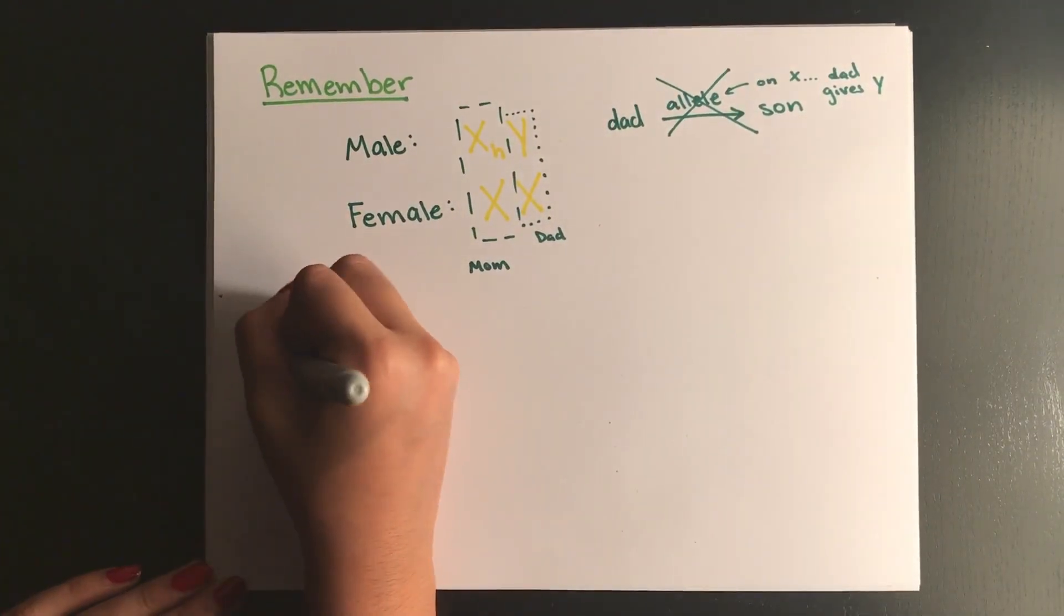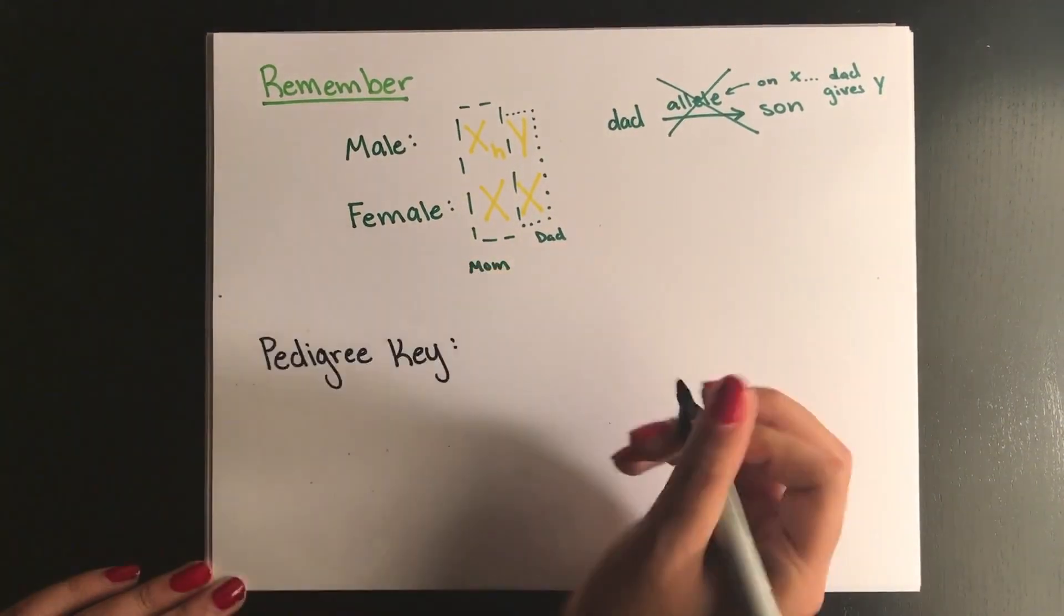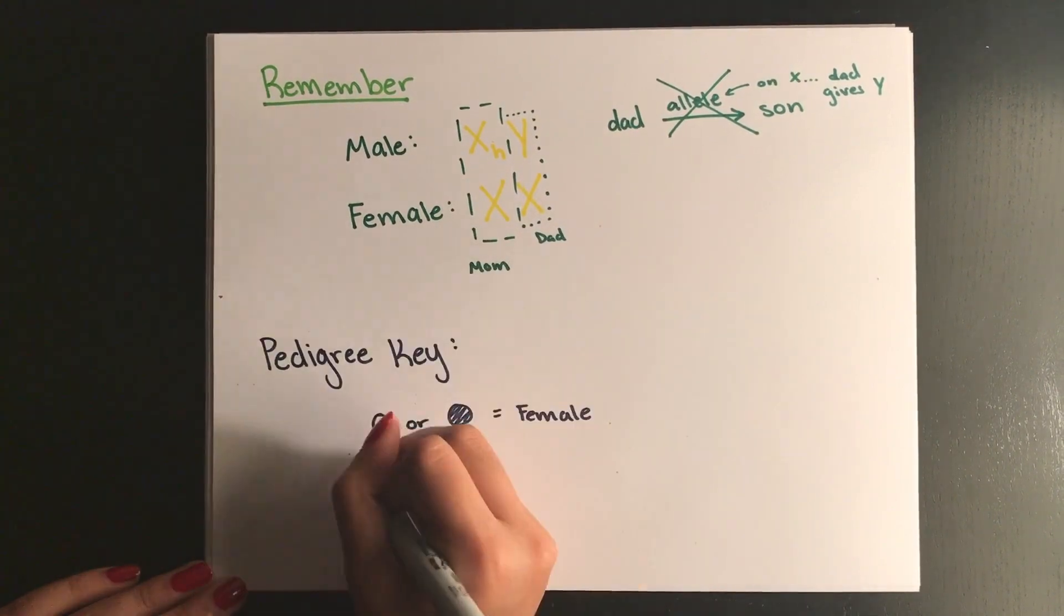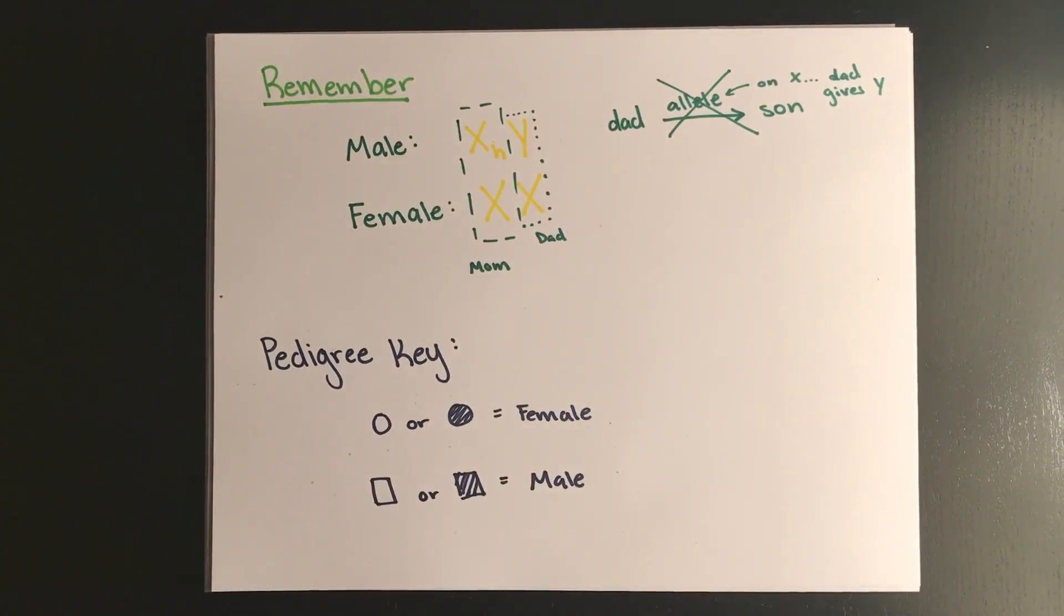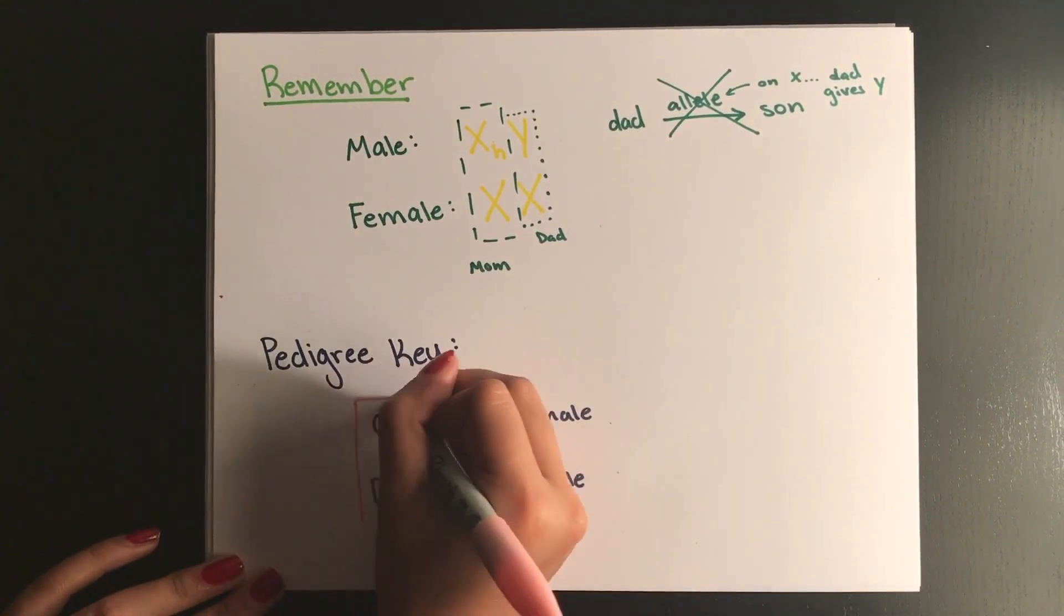Another diagram to be familiar with before the test is called a pedigree, which is a chart that shows the presence of a particular phenotype over multiple generations. Typically males are represented by squares and females by a circle, and affected individuals have their shape shaded in.